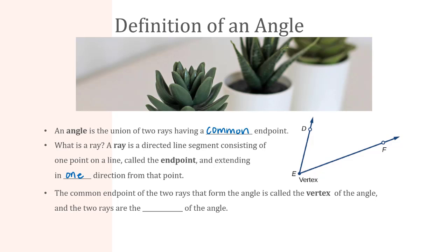The common endpoint of the two rays that form the angle is called the vertex of the angle, and the two rays are the sides. So those rays become the sides of the angles.